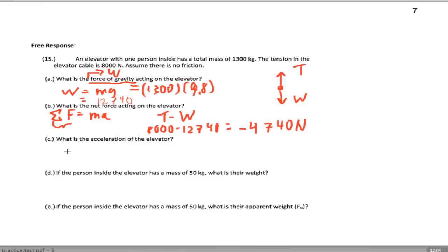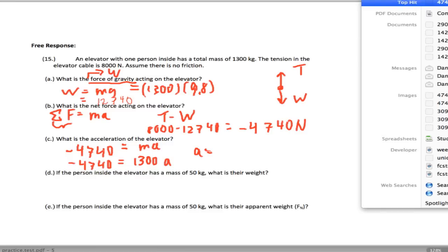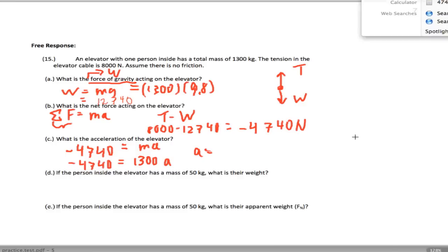What's the acceleration of the elevator? The net force is mass times acceleration, so negative 4,740 equals 1,300 times A. The acceleration ends up being 3.6 meters per second squared.